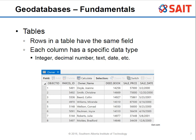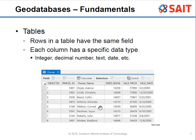Tables in geodatabases have every row representing the same type of object with all the information about that object. Empty cells are okay — they may just say no data. Every column holds one type of data, such as parcel ID, owner name, or sale price. Each column is identified by a data type — for example, parcel ID is an integer, sale price might have decimals, and we also have dates and text for names. We can use many different kinds of data types to describe our features.